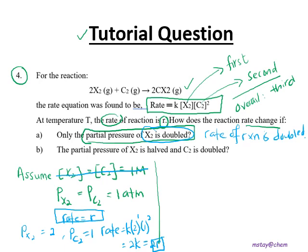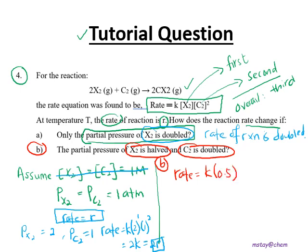For part B, the partial pressure of X2 is halved and C2 is doubled. Rate = k × (0.5)^1 × (2)^2 = k × 0.5 × 4 = 2k, which equals 2R. So the rate of reaction also doubles.